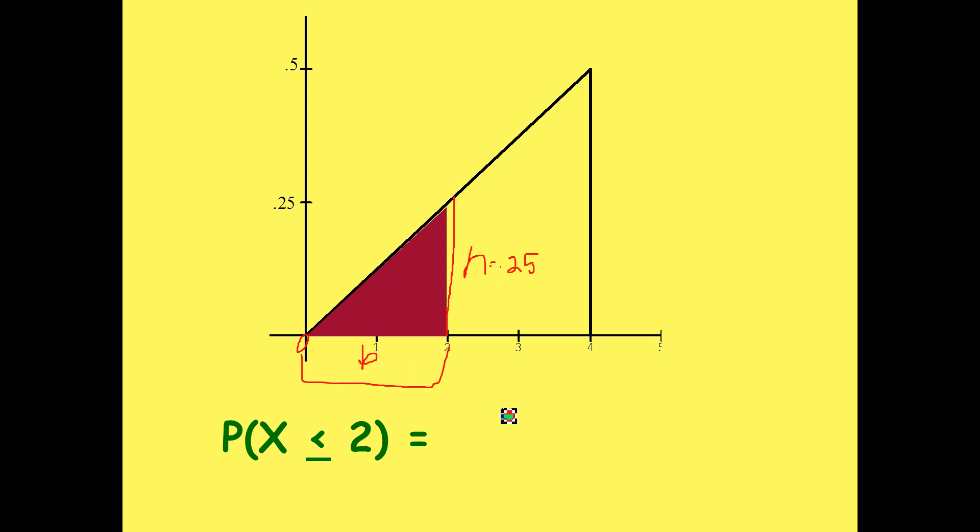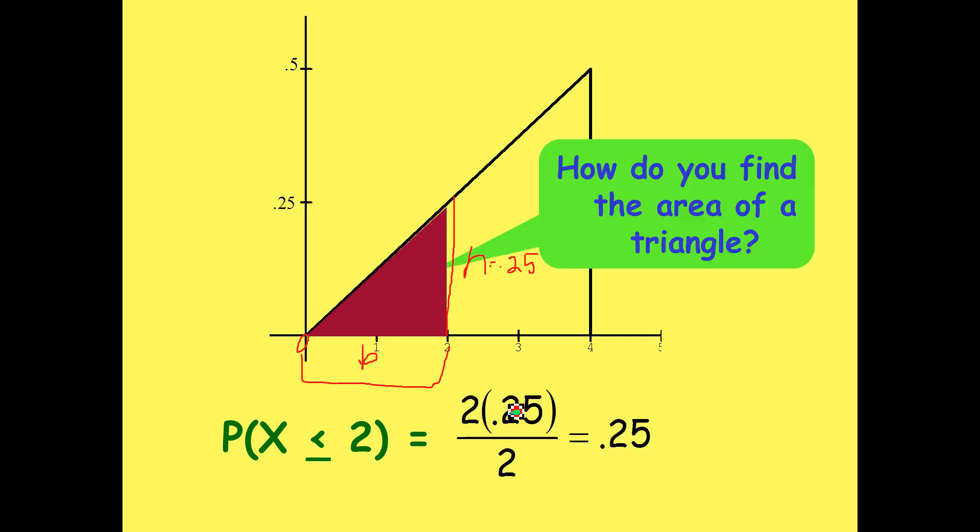Doing the basic formula for a triangle, base times height divided by 2, we get an area of 0.25, which means the probability of the random variable x having a value from 0 anywhere to 2 is going to be 0.25 or 25%.